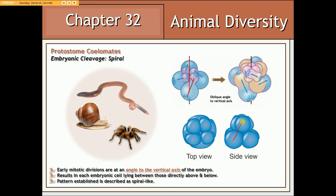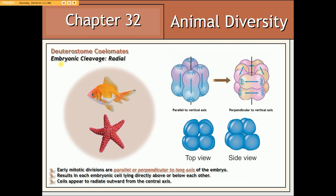In contrast, the manner of embryonic cleavage among deuterostome coelomates such as echinoderms and chordates is often referred to as being radial. In this manner of cleavage, mitosis occurs either parallel to the vertical axis or perpendicular to it. As a result, when we view the embryo from the top, all of the cells seem to radiate from the center of the vertical axis — hence the term radial embryonic cleavage.